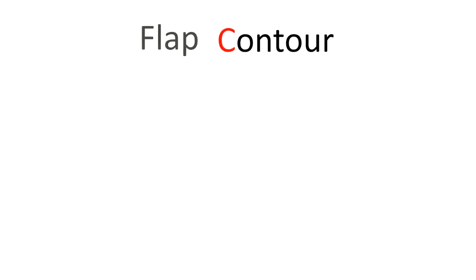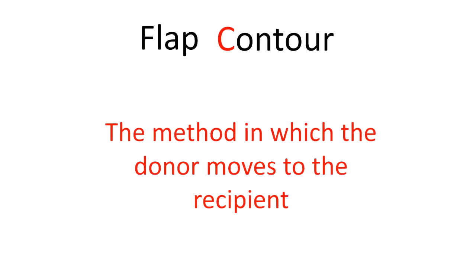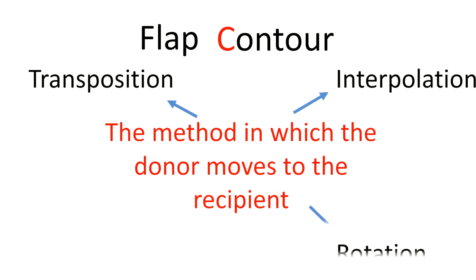We talk about contour, this is the method in which the donor moves to the recipient. A few ways this can happen: transposition, interpolation, rotation or advancement.